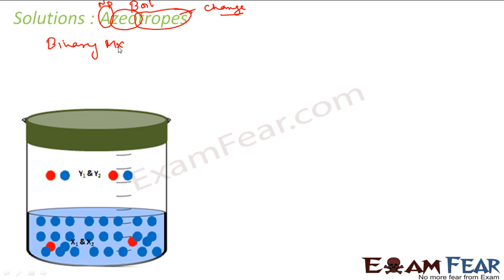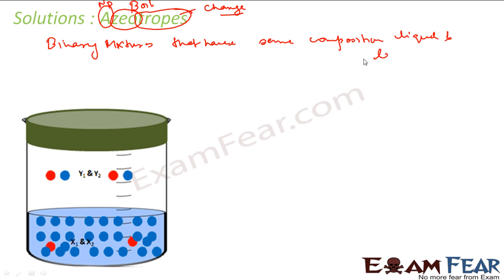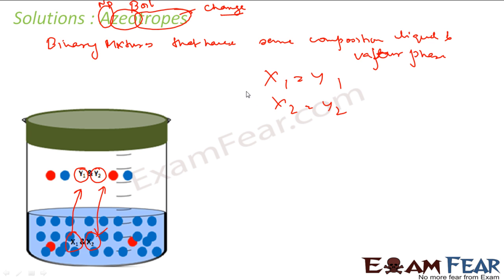Azeotropes are binary mixtures of solutions that have the same composition in the liquid and vapor phase. This means y1 equals x1, and y2 equals x2. If you don't know what x1, x2, y1, y2 are, please watch the previous videos. The molar fraction of component 1 in the liquid phase and vapor phase will be the same, and similarly for component 2.